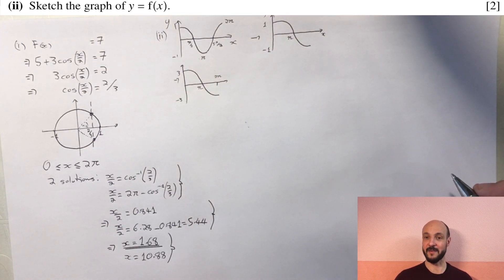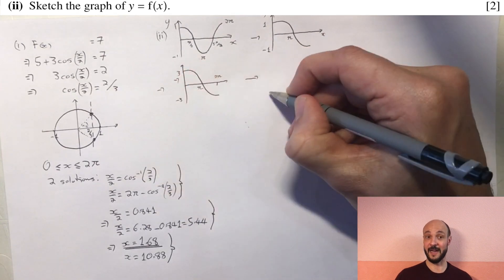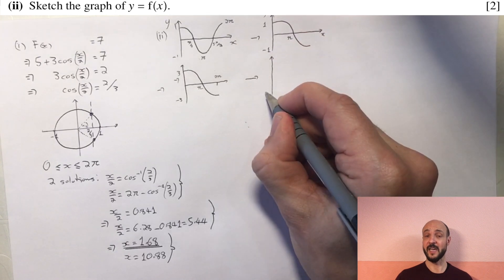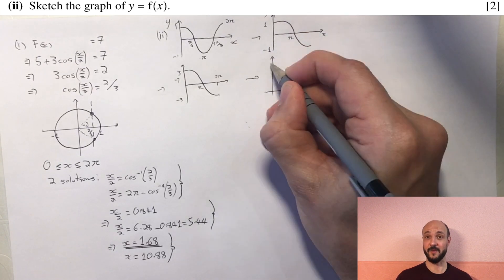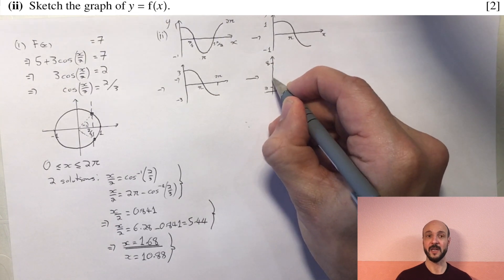And then what we're doing, we've got a 5 plus 3 cosine of x over 2, so we're adding 5 to the y-axis, which is effectively a translation of 5 in the vertical direction. So we move everything 5 up.